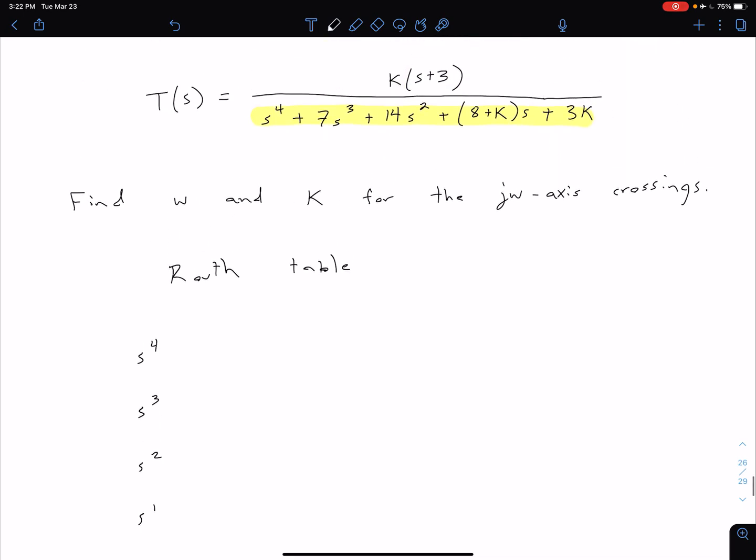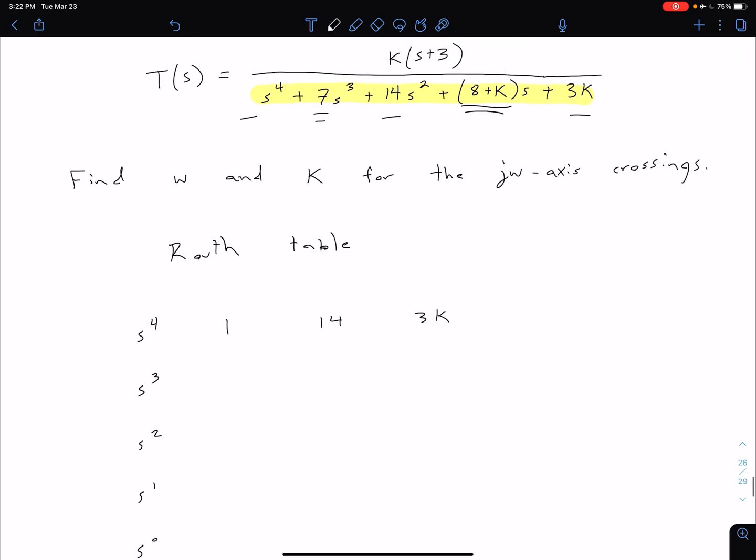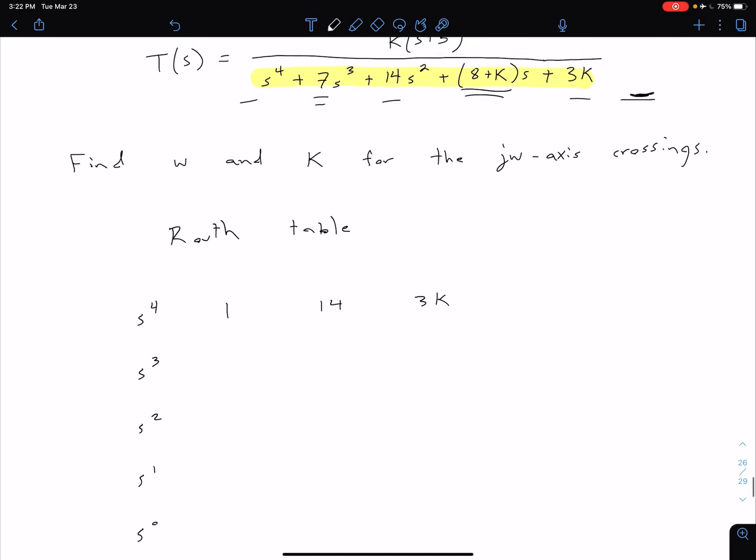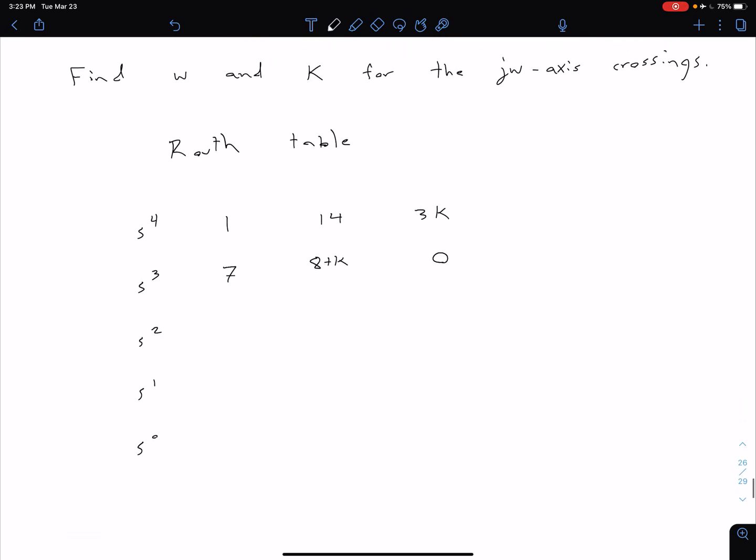Our first row I'm going to get from our coefficients 1, 14, and 3K. The next row is going to be those coefficients that I skipped. But when I get over here, I don't have any other coefficients, so I'm just going to put a zero. So I have 7, the quantity of 8 plus K, and then a zero.